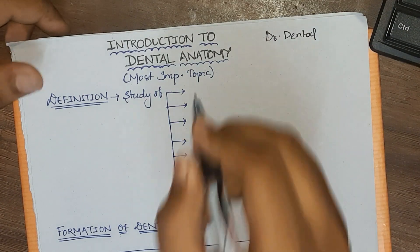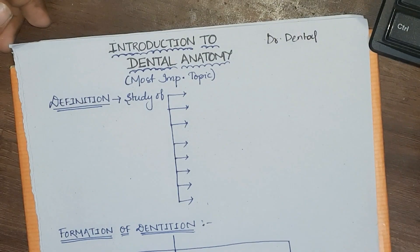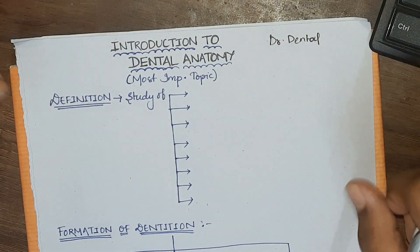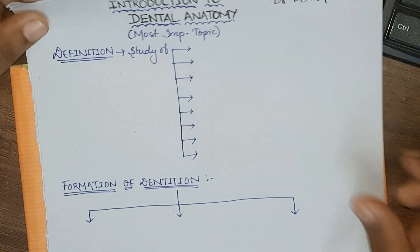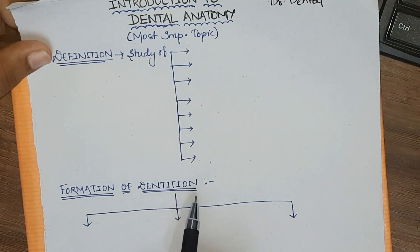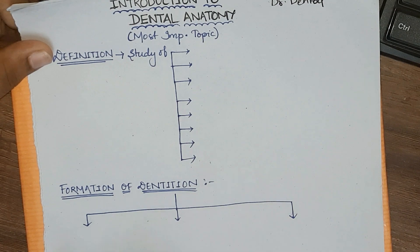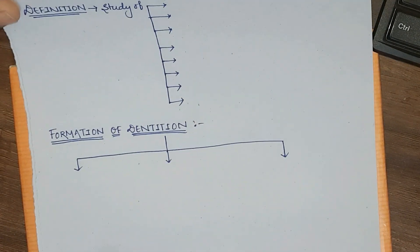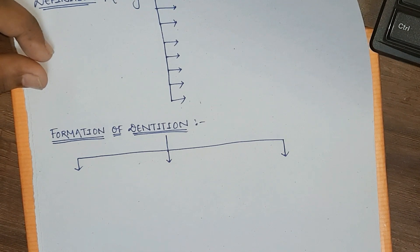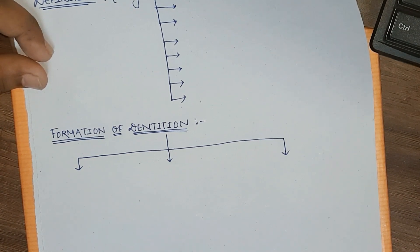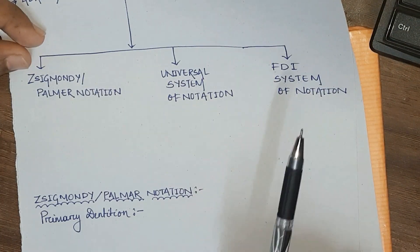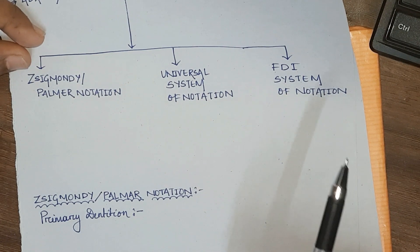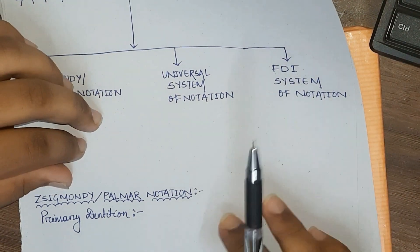Hello guys, this is Avinas and you are watching Dr. Dental's Mind Changes the Mode. In today's video, we are going to discuss the introduction to dental anatomy. In the first part, we will discuss the definition, then the formation of dentition with its three types, two anatomical terms (mandibular and maxillary), and finally the dental formula for both primary and secondary dentition. Watch this video till the end and don't forget to like, share, and subscribe, and click the bell icon for notifications.